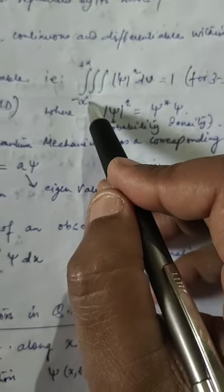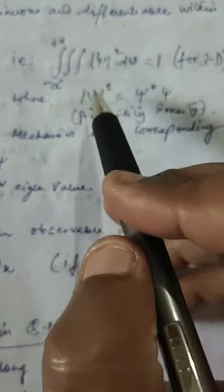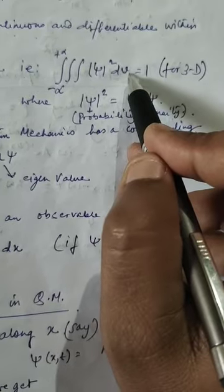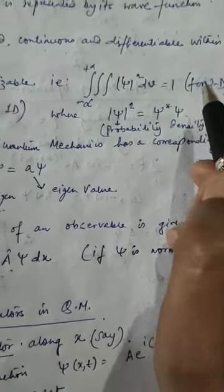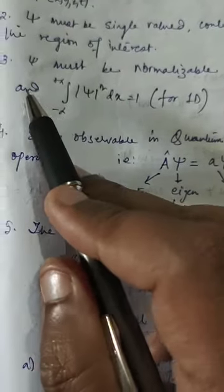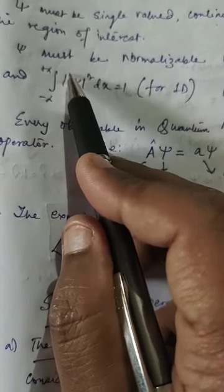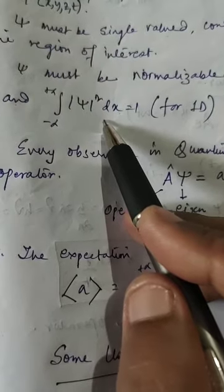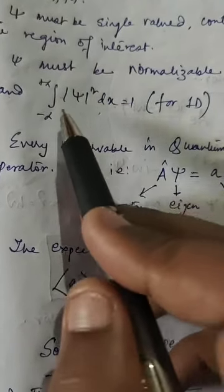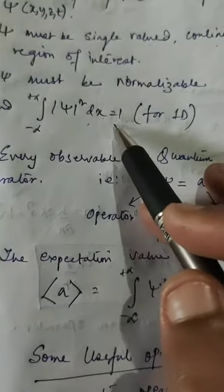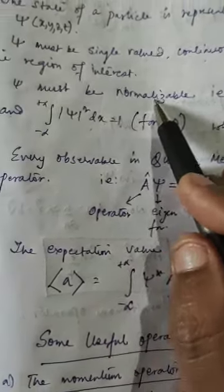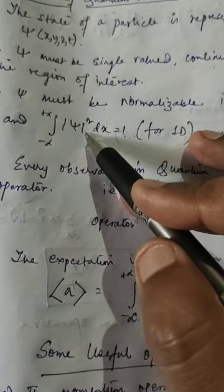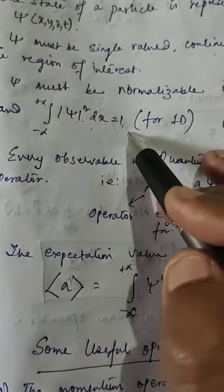The triple integration from minus infinity to plus infinity of mod of psi squared dV, where dV is the elemental volume element, must be equal to 1 for the three-dimensional case. Similarly, for the one-dimensional case, the integral of mod of psi squared dx from minus infinity to plus infinity must equal 1. This is called the normalization condition.